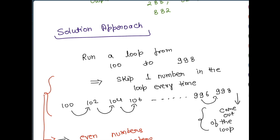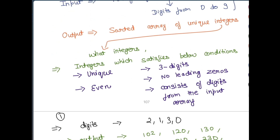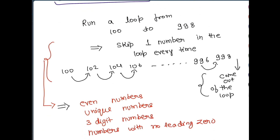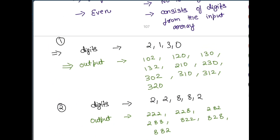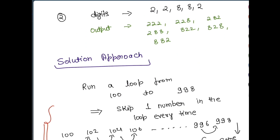Another advantage of this approach: the data will already be sorted, since we iterate from 100 to 998 in order. So all four conditions — unique, even, three digits, no leading zeros — are handled automatically. The only remaining condition to check is whether each number's digits consist of digits from the input array. For each valid number, we store it in a result array.